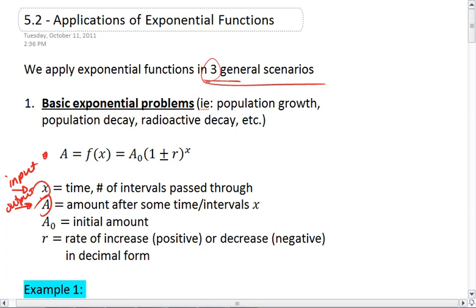A sub 0 is the initial amount, or it's the amount at x equals 0. That's why it has this little sub 0 here. And r is the rate of increase, which would be a positive r, or decrease, which is a negative r, in decimal form.